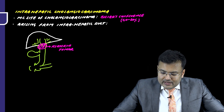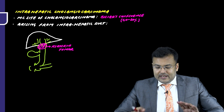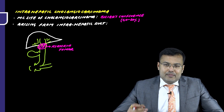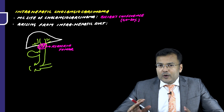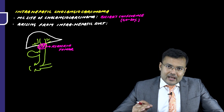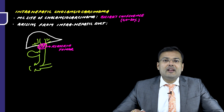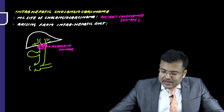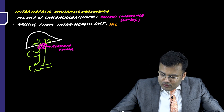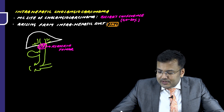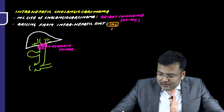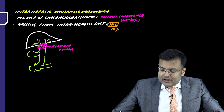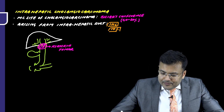So, the most common site is the hilum or biliary confluence. Now, in how many cases is cholangiocarcinoma arising from the intrahepatic duct? When cholangiocarcinoma arises from the intrahepatic duct, this is known as intrahepatic cholangiocarcinoma, and it is responsible for 10% of cholangiocarcinoma cases.